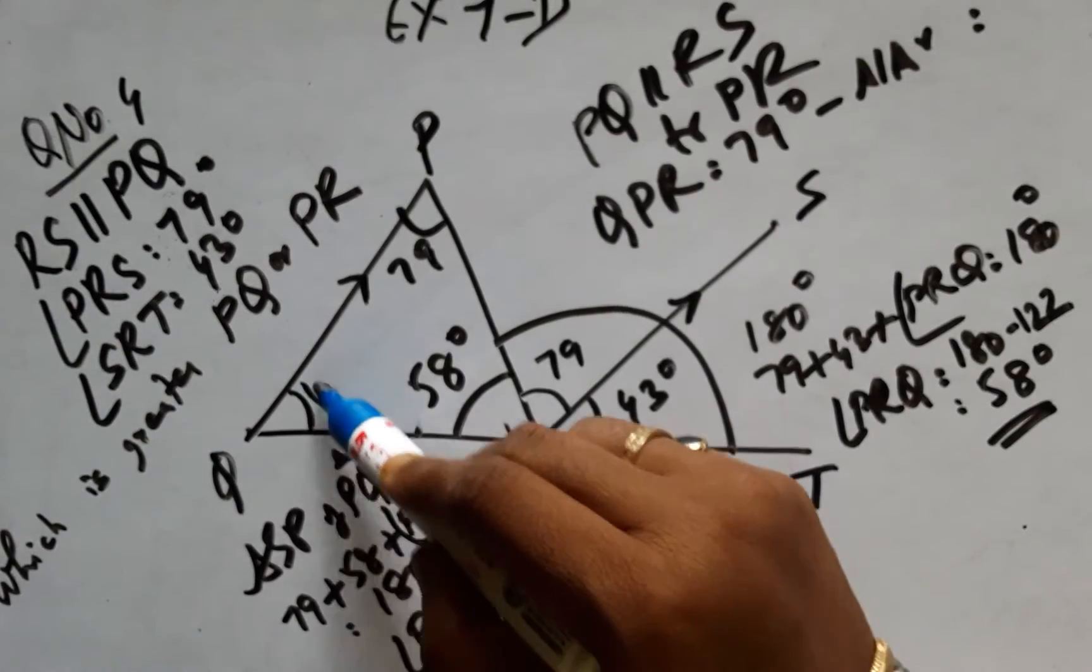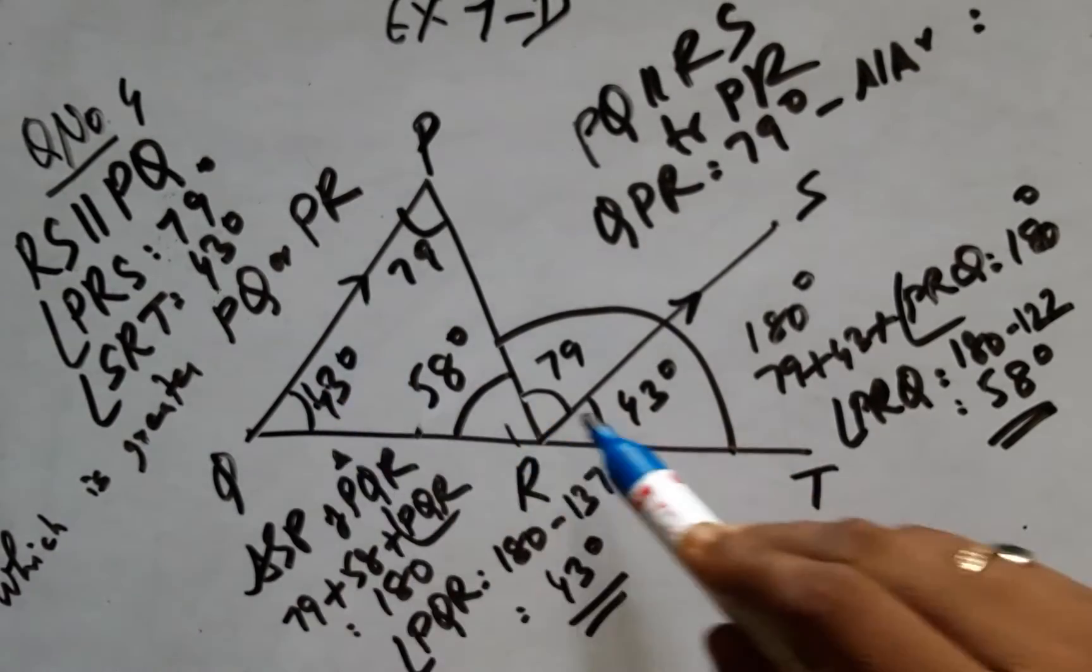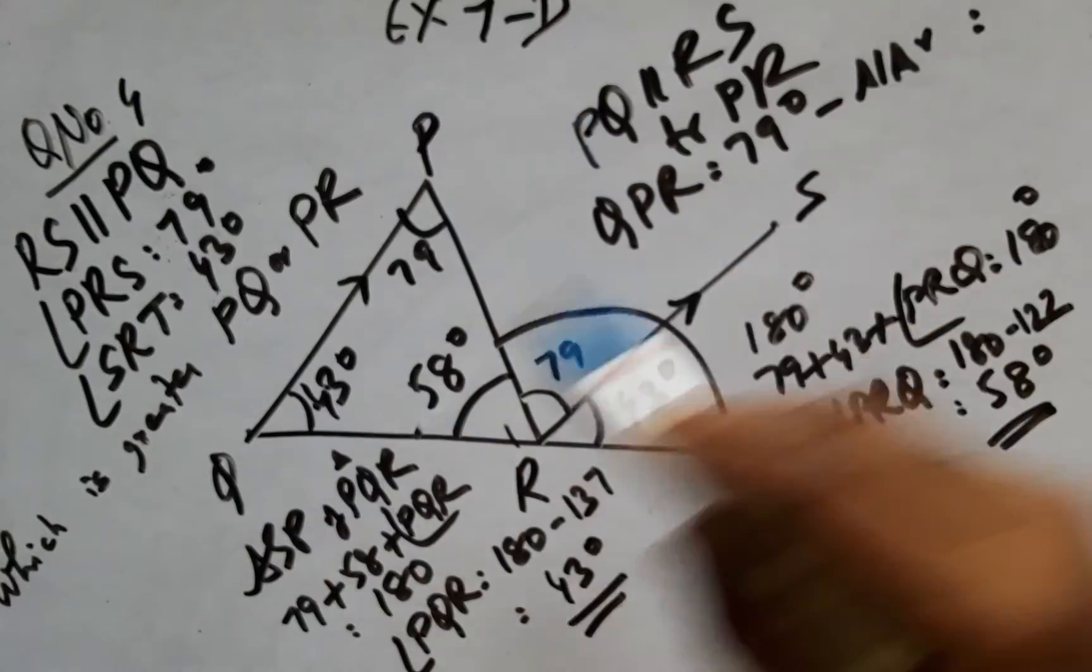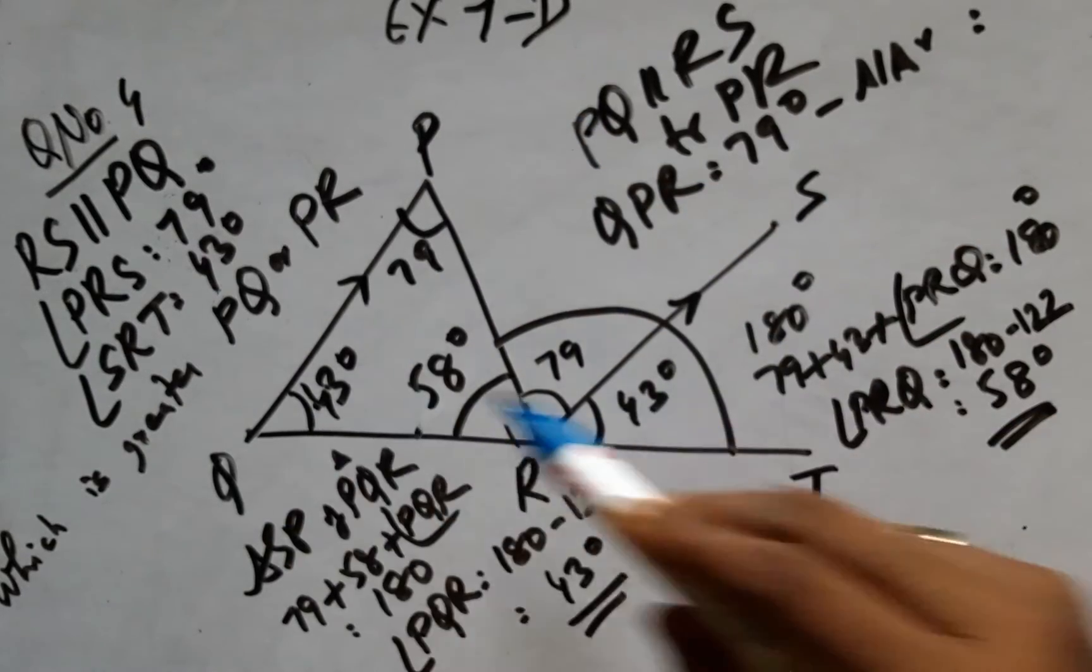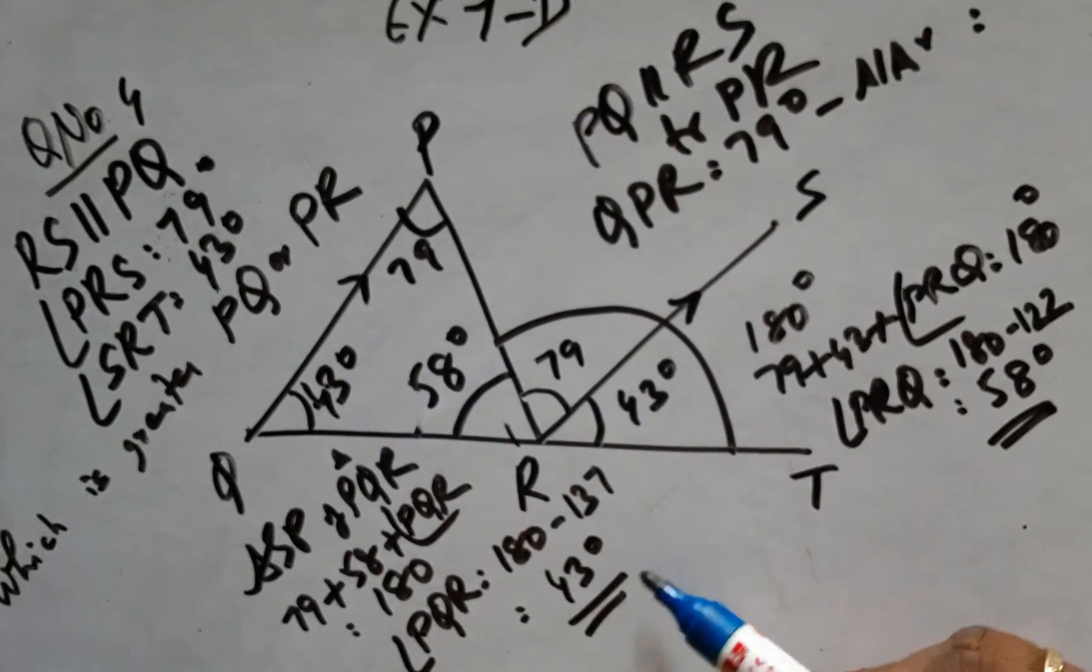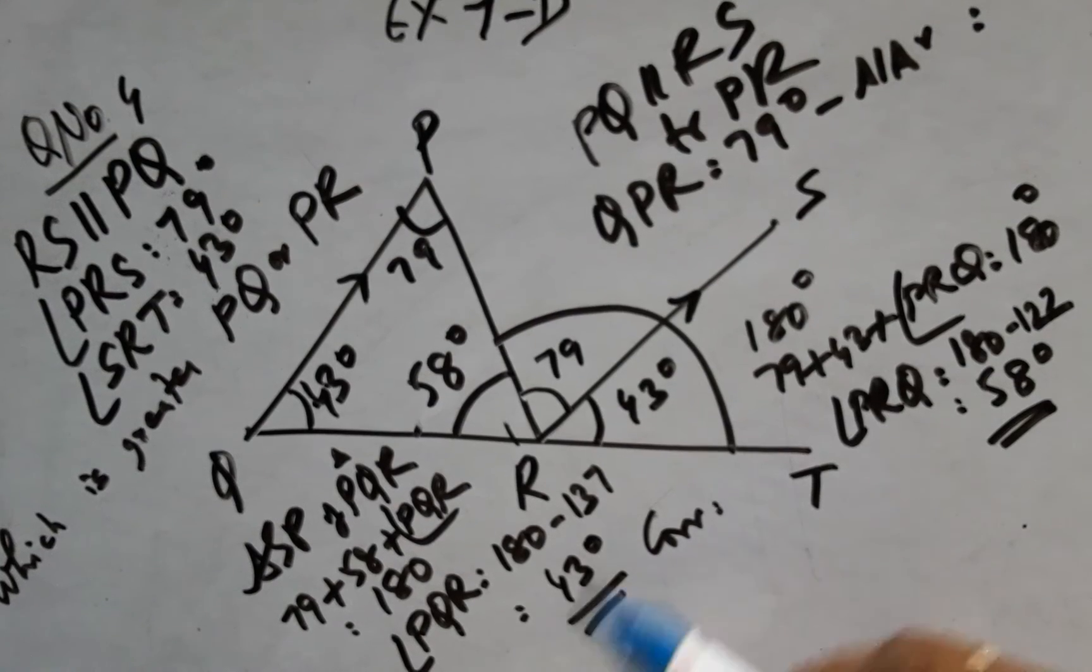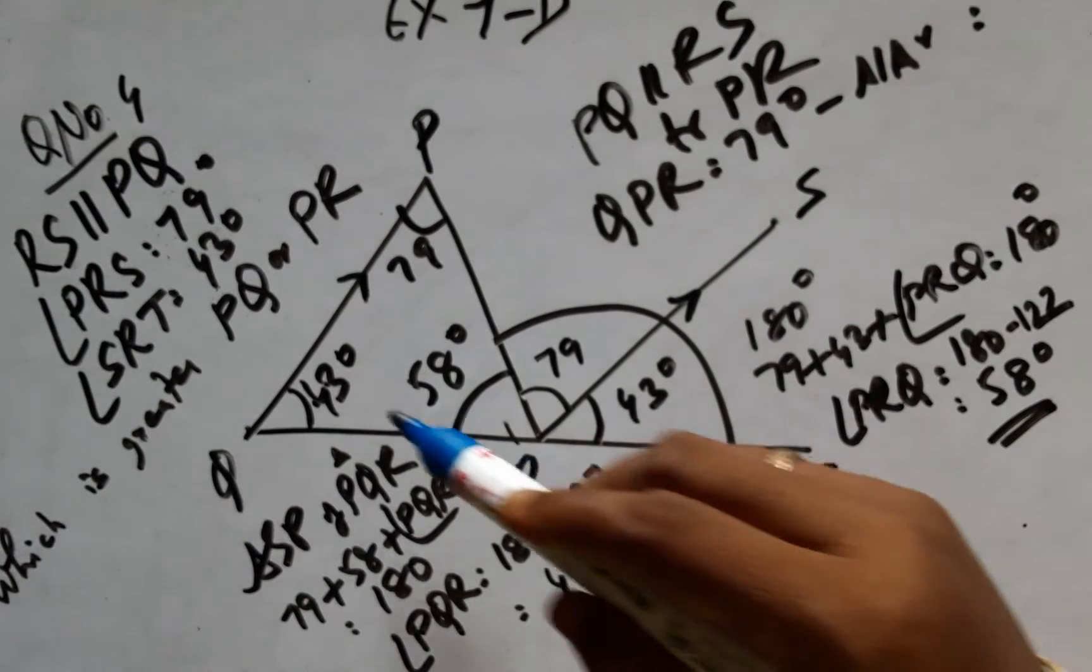I can also arrive at this 43 degrees using these two parallel lines PQ parallel to RS. These angles are corresponding angles, which are equal. This is a very short and easy shortcut.